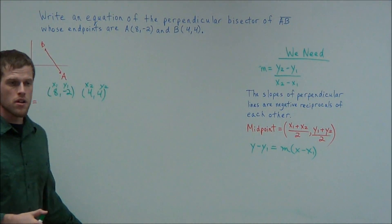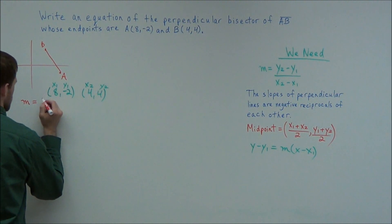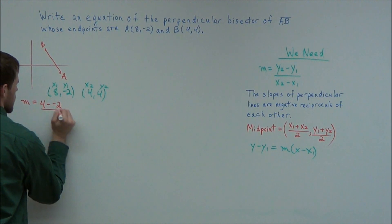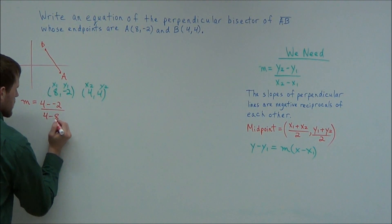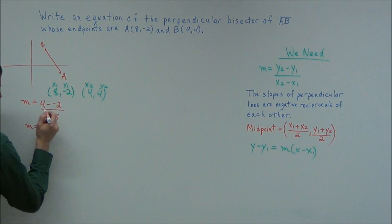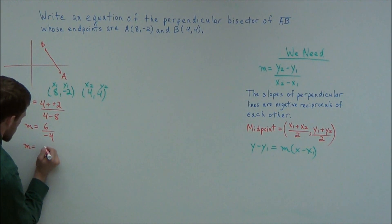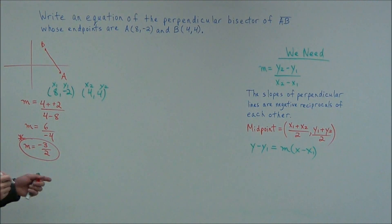So now all we need to do is plug these values into the equation for slope. So we're doing 4 minus minus 2, y2 minus y1, over x2 minus x1, so we have 4 minus 8. So this tells us right away that our slope, 4 minus a minus 2, becomes 4 plus 2, giving us 6, and 4 minus 8 is negative 4. So now we have a slope of 6 over negative 4, but we need to reduce this. So we can reduce this down to negative 3 over 2. So we have one important piece of information. We have the slope of our original line.